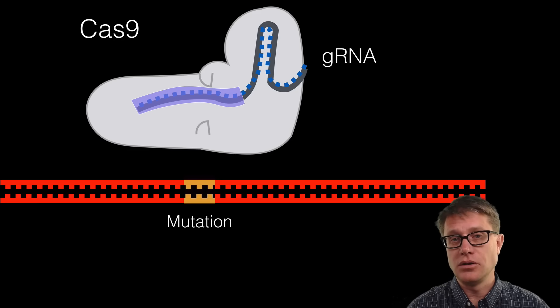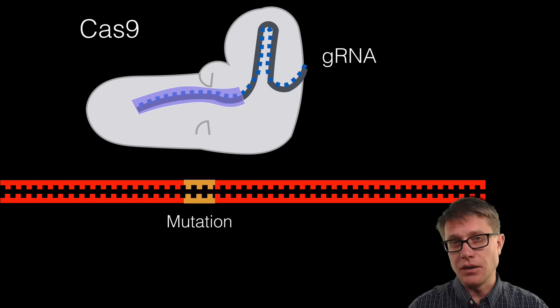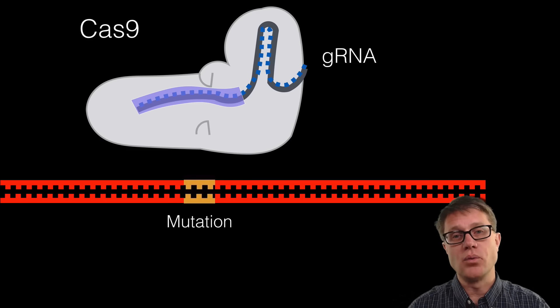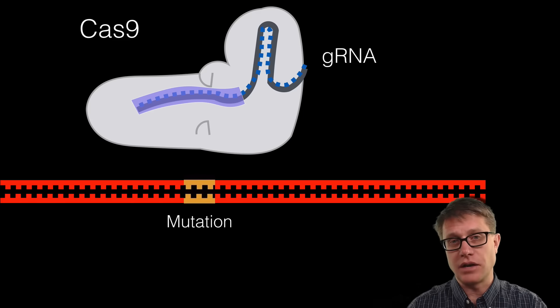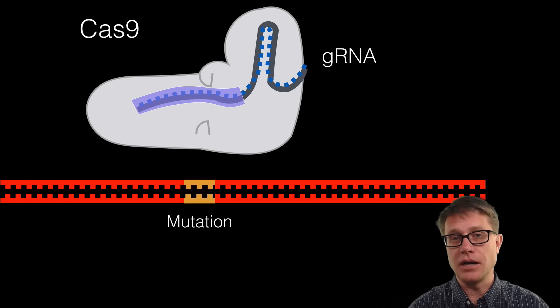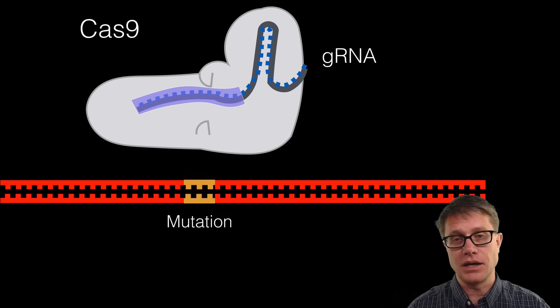That is what the bacteria are going to do. But since we have created this system ourselves, we can cut the DNA wherever we want. We essentially just need to know the sequence of DNA we want to cut, put that into the guide RNA, and then we can cut it.